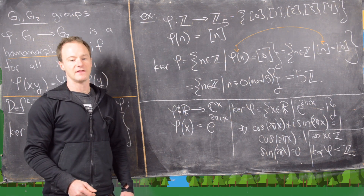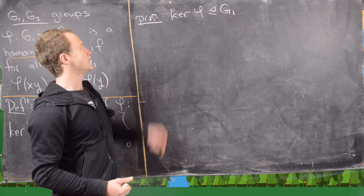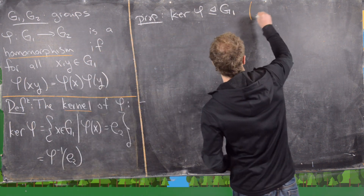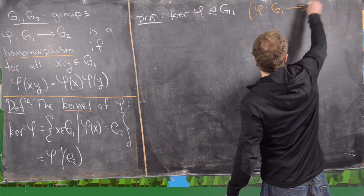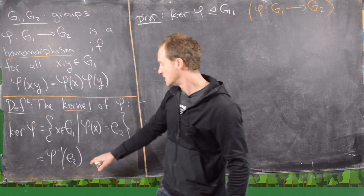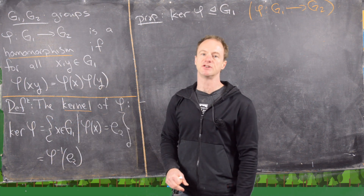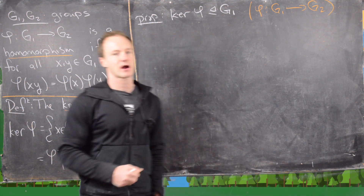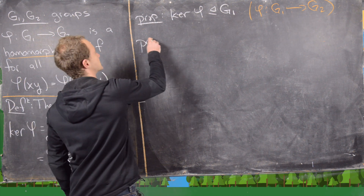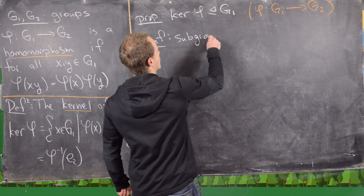Now we're going to prove an important result regarding kernels: the kernel of a homomorphism phi is a normal subgroup of the domain. The setup is that phi is a homomorphism from G1 to G2. We could do this quickly using a previous result about inverse images preserving normality, but instead we'll prove it from scratch. First we show it's a subgroup, then that it is a normal subgroup.